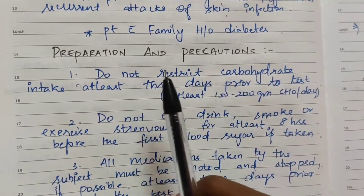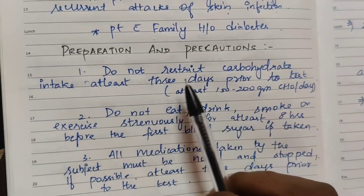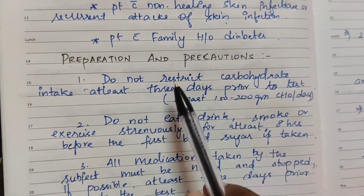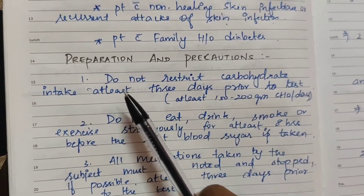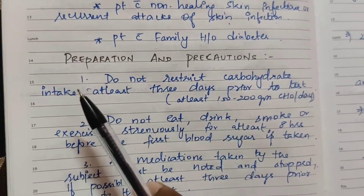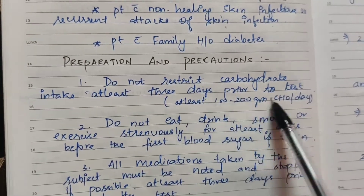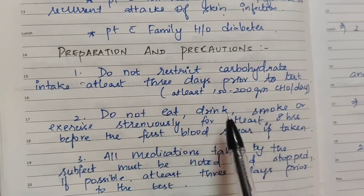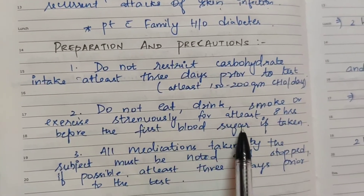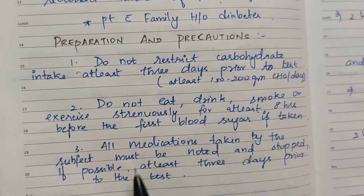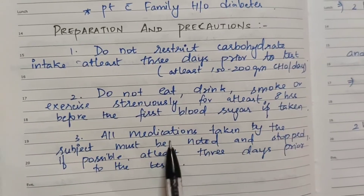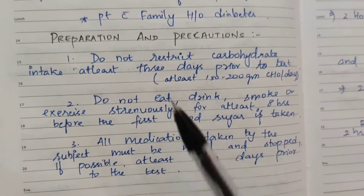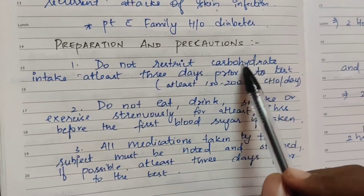Precautions and preparation: do not restrict carbohydrate intake for at least 3 days prior to the test. Do not eat, drink, smoke, or exercise strenuously for at least 8 hours before the first blood sugar is taken. All medications taken by the subject must be noted and stopped if possible at least 3 days prior to the test.